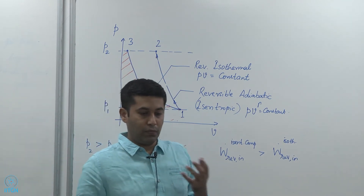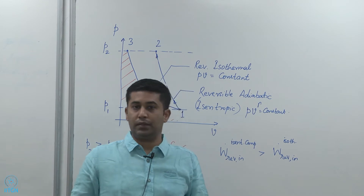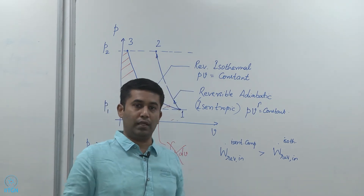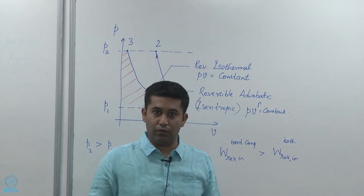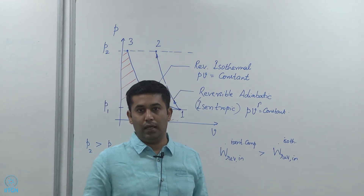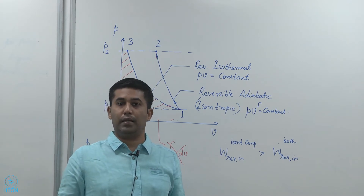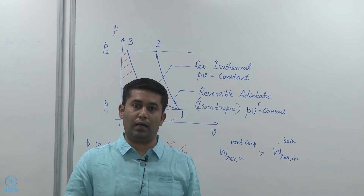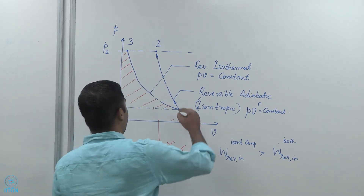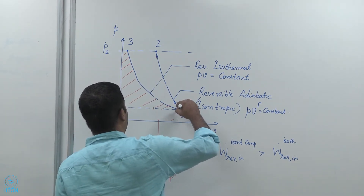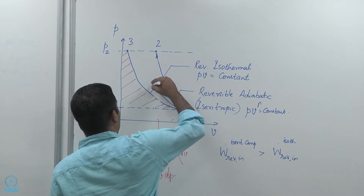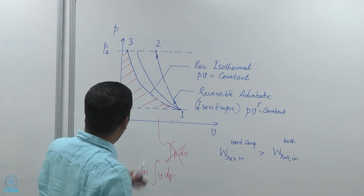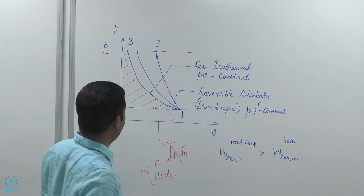In practical compressors, typically there is some arrangement to lose heat. For example, fins are provided on the outside of compressors that then lose some of the heat. They are not isothermal but they are not adiabatic either — so they are somewhere between adiabatic and isothermal, and follow a curve between the reversible adiabatic and reversible isothermal curves.